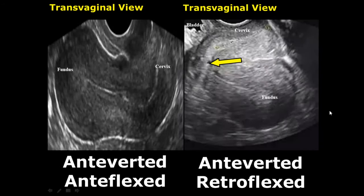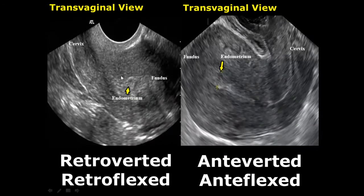In the retroverted and retroflexed uterus, the cervix is tilted posteriorly and the body of the uterus is also facing posteriorly. You can see it on the right side of the image because the bladder will be appearing on the top left or left side of the image.